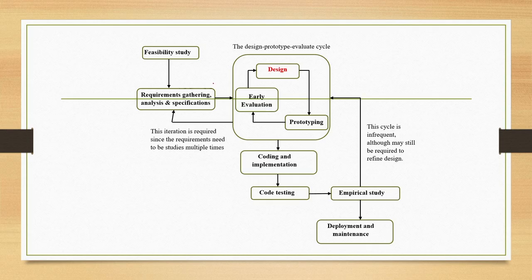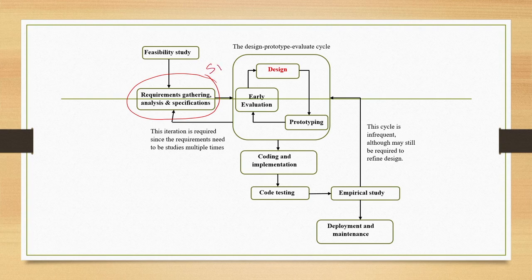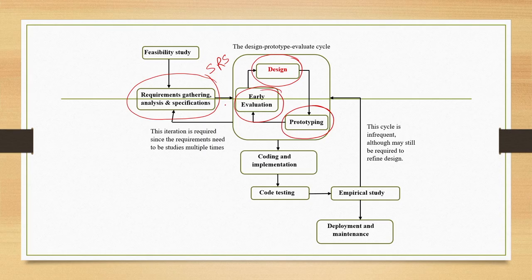In the development life cycle, we have already covered in detail the requirement gathering, analysis, and specification stage. At the end of this stage, we get an SRS document or Software Requirements Specification Document. Then we talked about the design, prototype, and evaluation cycle consisting of three sub-stages. This cycle is primarily meant for interface design. Once we arrive at a stable interface design, taking care of usability concerns, we go for code design.